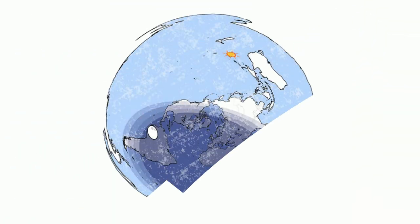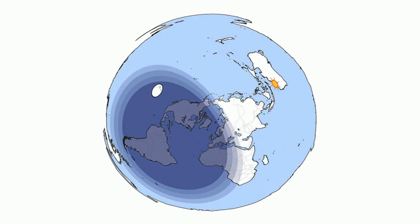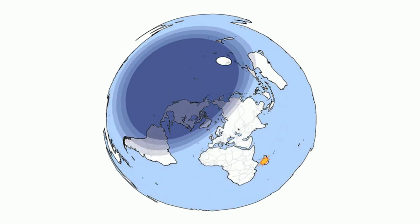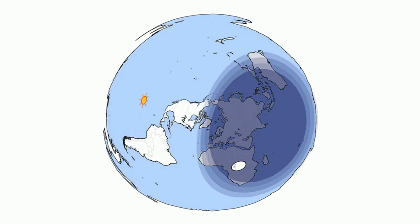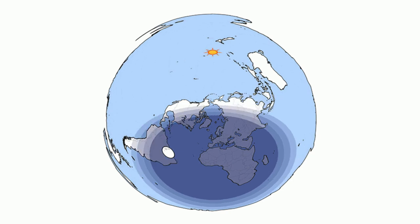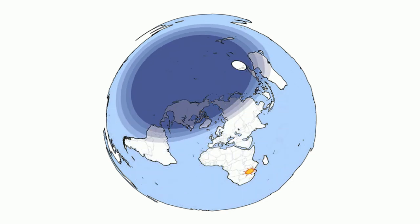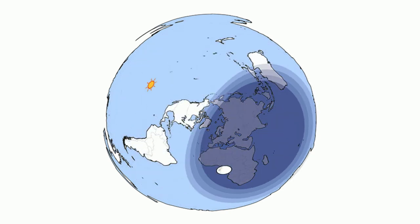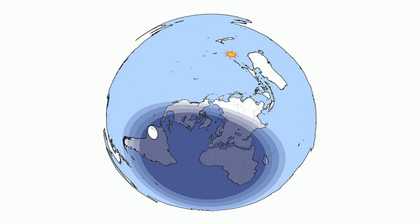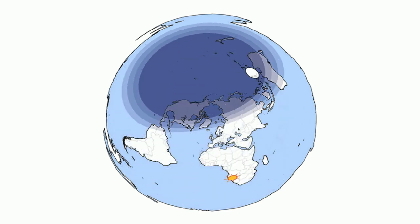At all times, half of the world is in light and the other half is in dark because of this rotation of the earth.